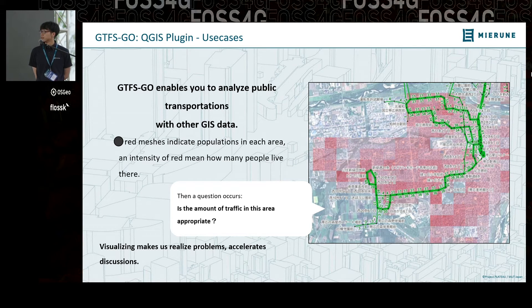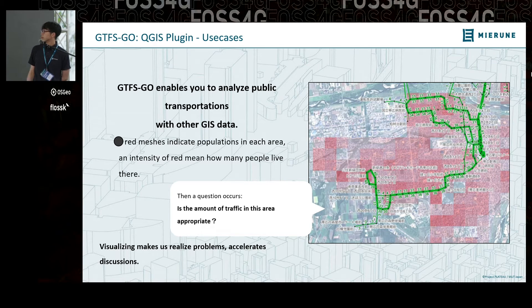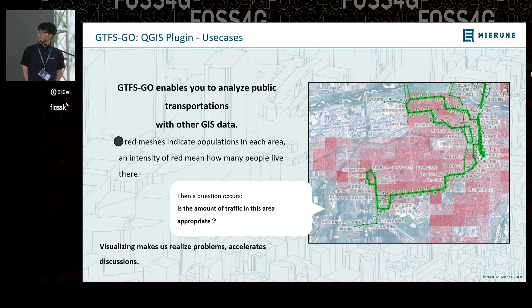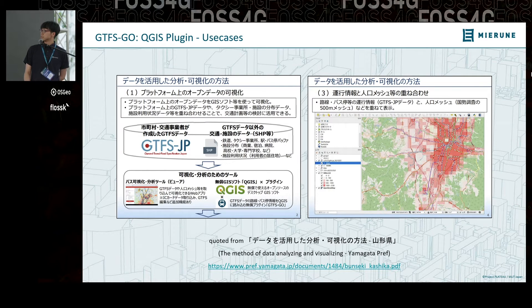Use cases: GTFS Go enables you to analyze public transportation with other GIS data. This figure is output of GTFS Go, and red mesh shades indicate populations in each area. Visualizing like this, a question occurs: is the amount of traffic in this area appropriate? Too much or not enough? Visualization makes us realize problems and accelerate discussions. I believe this is the power of visualizing. This is a Japanese use case — Japanese local government uses such an example.